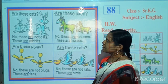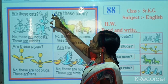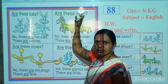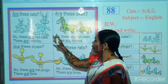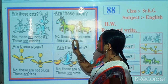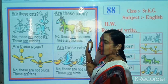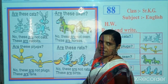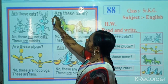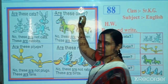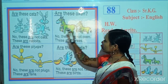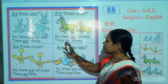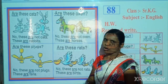Now look here. This is a picture of horses. Now read this question: Are these oxen? No, these are not oxen. These are horses. Are these oxen? No, these are not oxen. These are horses.